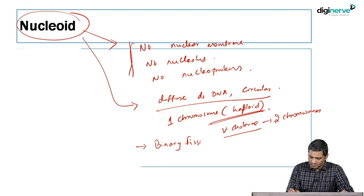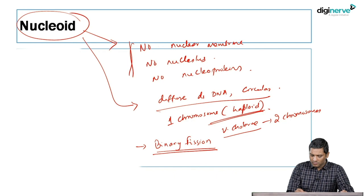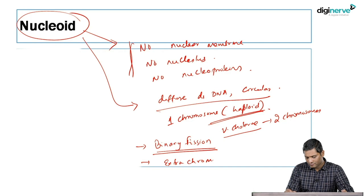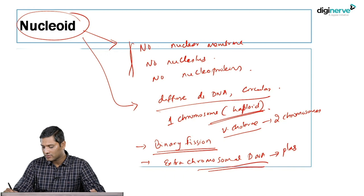Bacteria divide by binary fission. Bacteria may also have extra-chromosomal DNA material, other than the nucleus, inside a structure called a plasmid. Plasmids will be discussed in detail in the chapter of bacterial genetics.